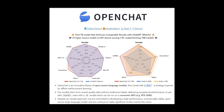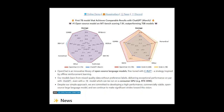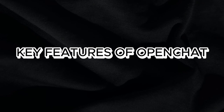What is the OpenChat model? OpenChat is a novel framework for advancing open source language models with mixed quality data. It leverages different data sources to improve language models and proposes a new method called conditioned reinforcement learning fine-tuning, which learns a class-conditioned policy to make the most of complementary data quality information. With this framework, we can advance open source language models with mixed quality data and improve their performance.